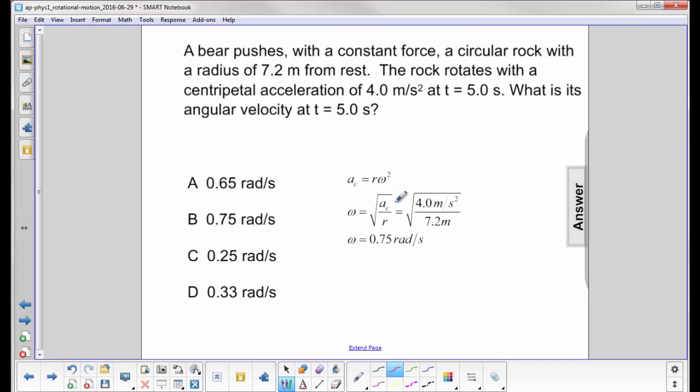So it's the square root of the centripetal acceleration over r. Substitute in the numbers and you come up with omega equals 0.75 radians per second. So the answer is B.